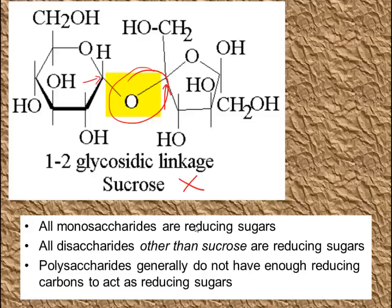That covers monosaccharides and disaccharides, along with condensation reactions and glycosidic linkages. You should also be able to recall which monosaccharides and disaccharides act as reducing sugars and describe how to test for a non-reducing sugar. Polysaccharides will be the subject of the next video — I hope that's helpful.